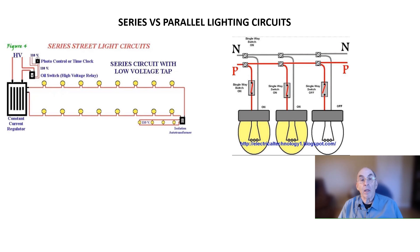The parallel lighting circuit shown on the right is much simpler. Each lamp is connected between the hot output line from a conventional transformer, labeled P in the diagram and a ground or neutral wire, labeled N in the diagram.